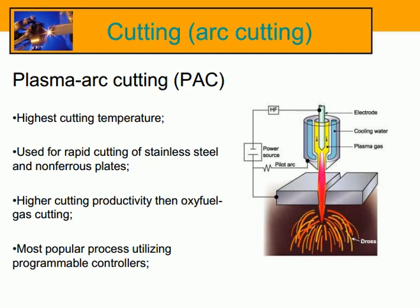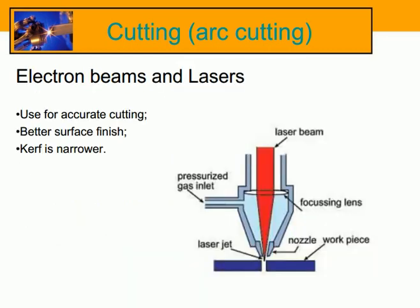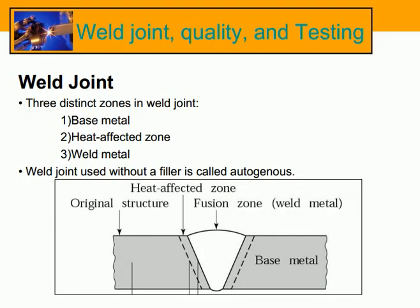Plasma arc cutting is the most popular process, utilizing programmable controllers and CNC plasma cutting systems. Electron beams and lasers are used for accurate cutting, providing better surface finish, a narrower kerf, and weld joint quality.